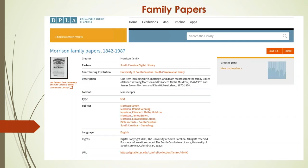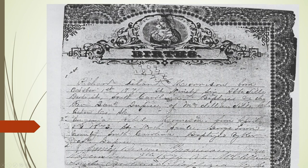Not only are there Family Bibles in DPLA, but there are also family papers. Family papers could be birth, marriage, and death records; letters; journals; and other things. For the case of the Morrison family, an example is this list of births where we can see that Richard Leland Morrison was born October 1, 1871, and Lugenia Rebecca Morrison was born April 25, 1873. From this page you can also learn baptismal information — when they were baptized and by whom Richard was baptized.